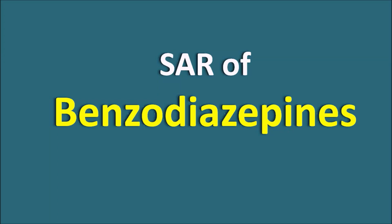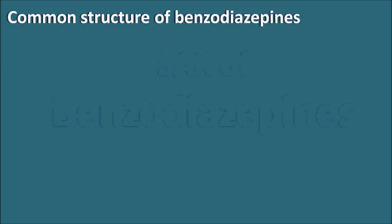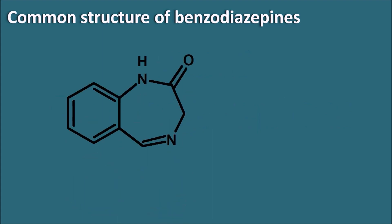This is the SAR (Structure-Activity Relationships) of Benzodiazepines. Let us first see the common structure of Benzodiazepines. In this structure, we can observe a benzene ring fused — hence the prefix 'benzo' — and it is attached with a seven-membered ring system containing two nitrogens, hence 'diaza', and being a seven-membered ring with unsaturation, the suffix is 'epine', giving us Benzodiazepines.